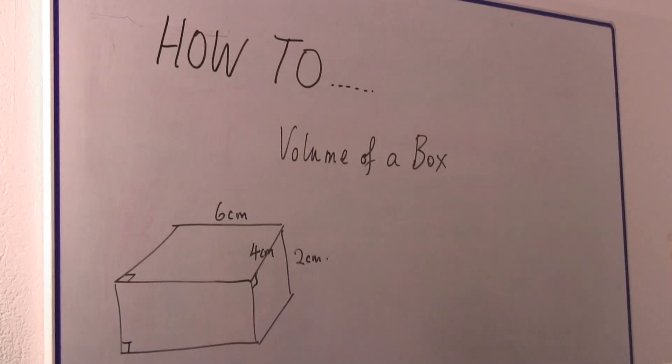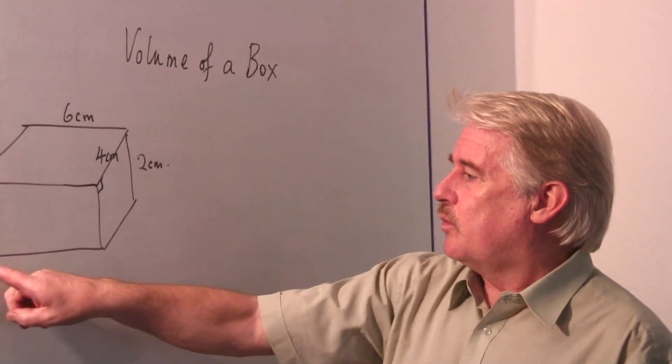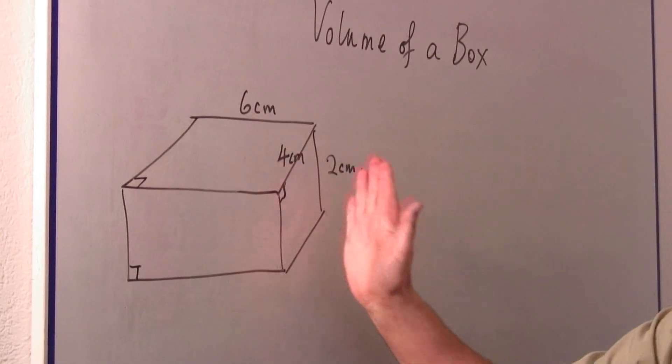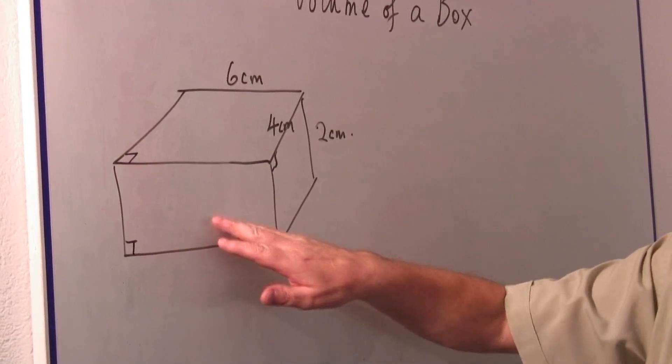Now first of all, what is a box? A box is basically a three-dimensional object where the corners are all right angles. So the sides are vertical and the top and bottom are horizontal.